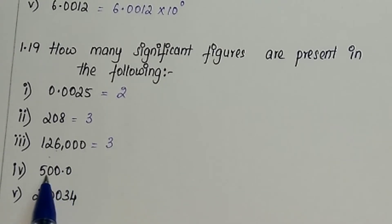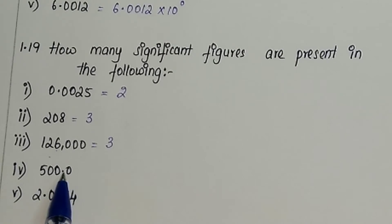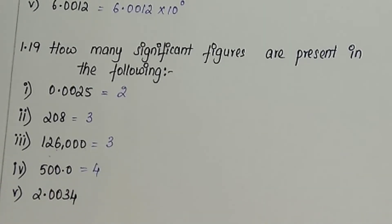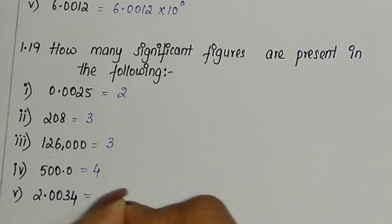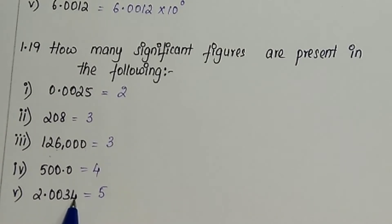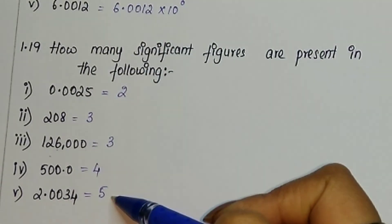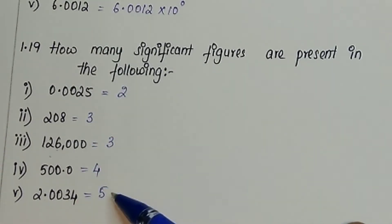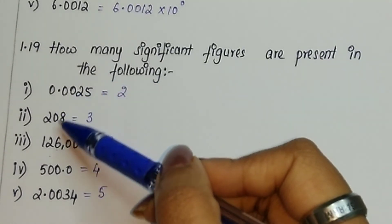The next number is 500.0. The zeros would not have been significant if there were no decimal, but since there is a decimal here, all the zeros are significant — giving 4 significant figures. The last number has zeros between two non-zero digits and a decimal, so all digits are significant, giving 5 significant figures. Following the rules from the NCERT book makes it easy to identify significant figures.